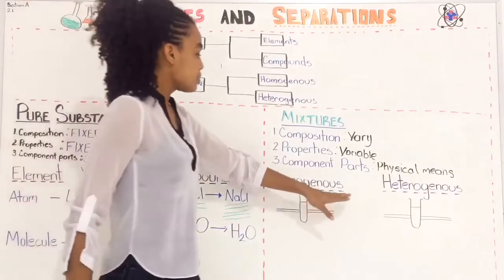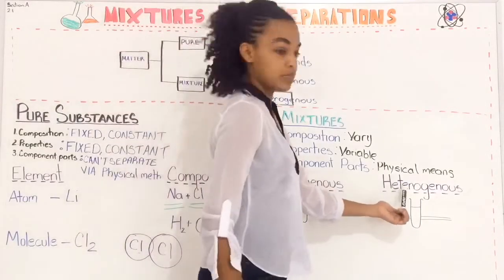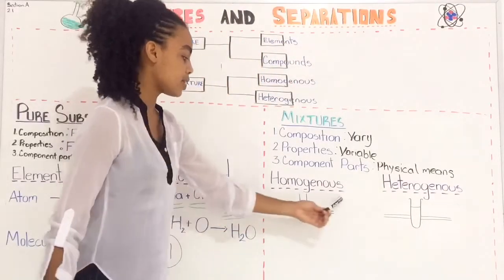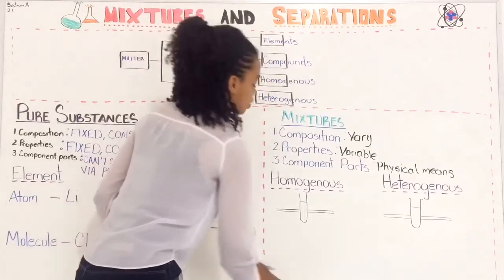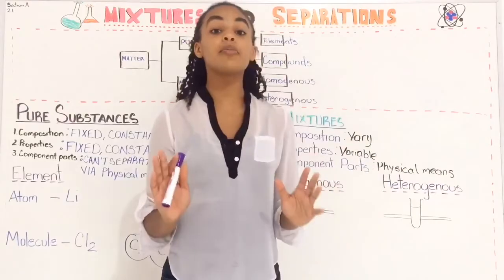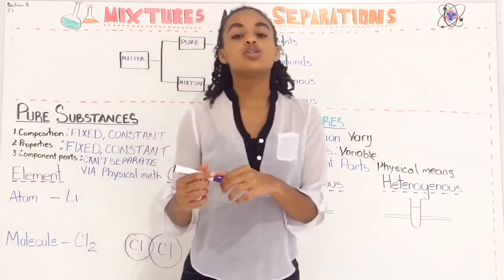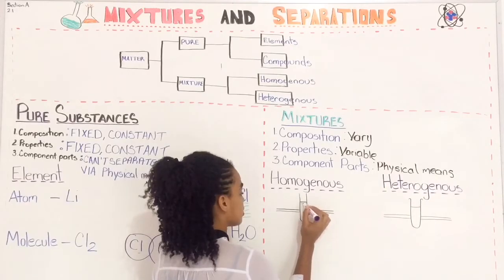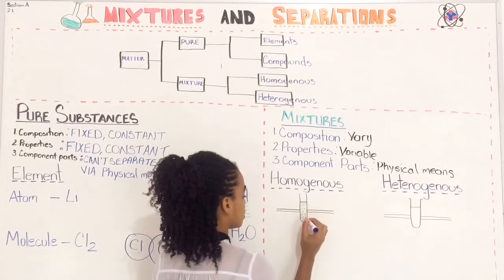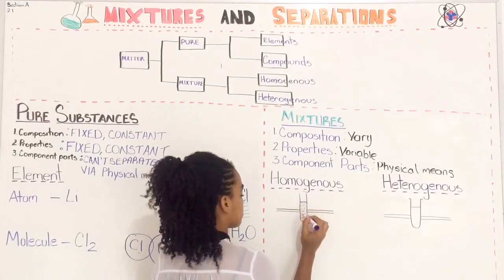The two types of mixtures are homogeneous and heterogeneous. 'Homo' means same, so a homogeneous mixture means same mix. Using the sugar-water example: the sugar dissolves — it's not chemically bonding to the water — but the sugar particles get smaller and smaller until you can't see them. So when you mix the sugar in the water properly, the mixture looks consistent throughout. You won't be able to tell the difference within a homogeneous mixture — everything looks the same.